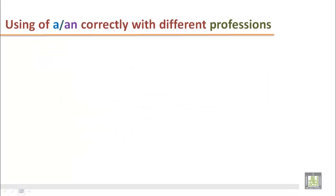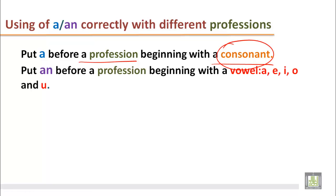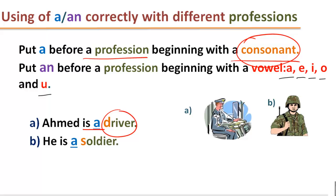Using A or An correctly with different professions. Let's see the use of A before a profession beginning with a consonant. Put An before a profession beginning with a vowel: A, E, I, O and U. Here is an example with a picture. Ahmed is a driver. Here the letter D begins the word driver. And we definitely have to put A before driver. He is a soldier. This word soldier begins with S and it is a consonant. And we have to use A before soldier.